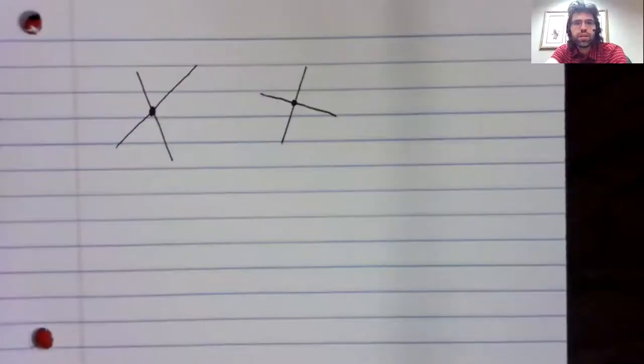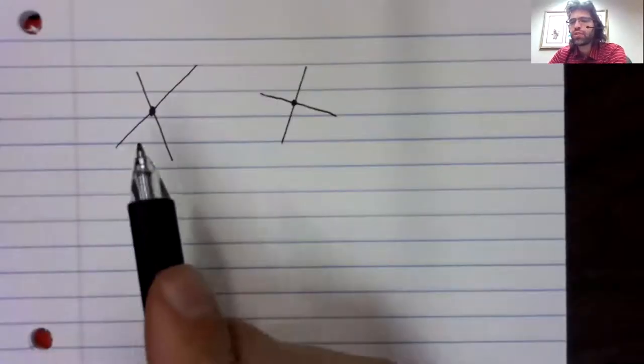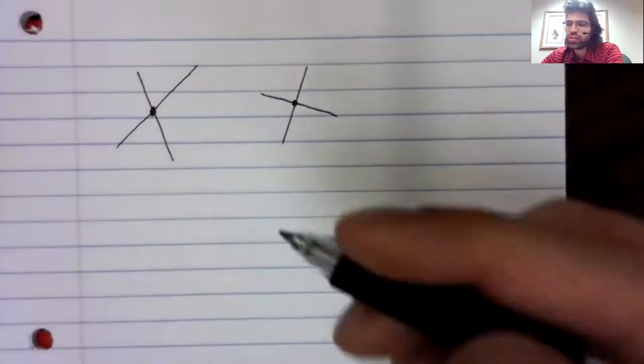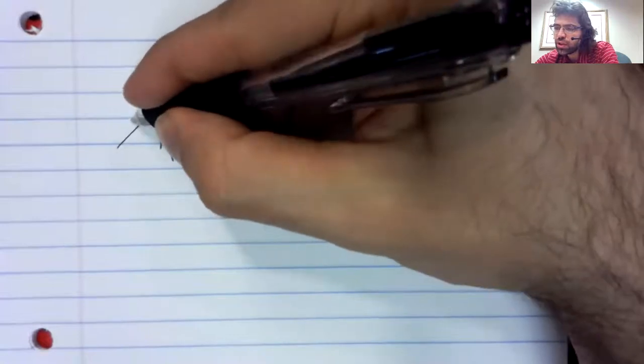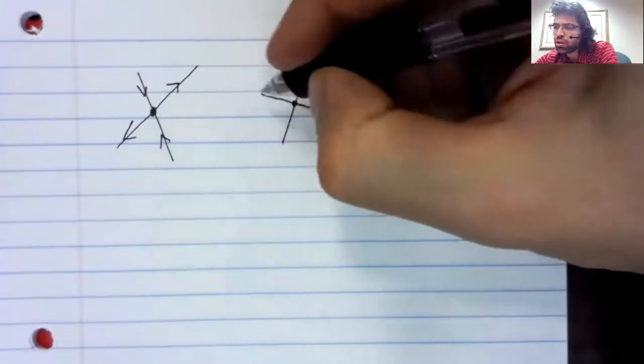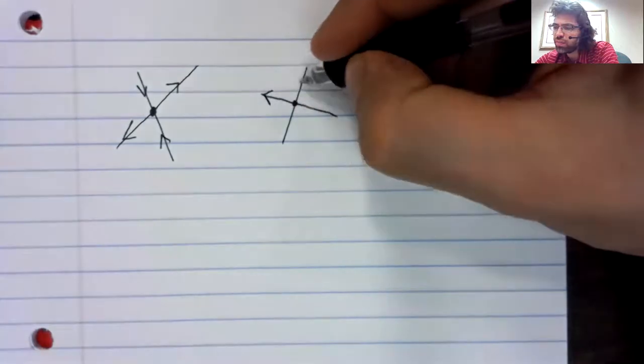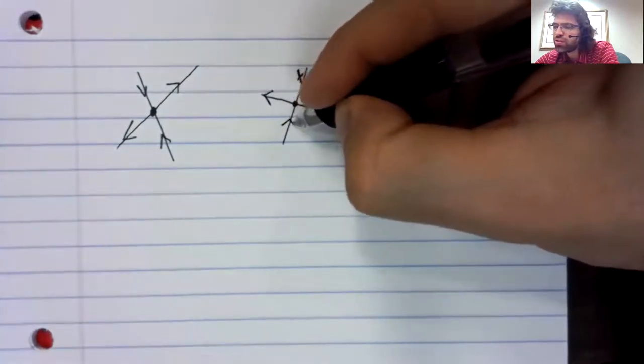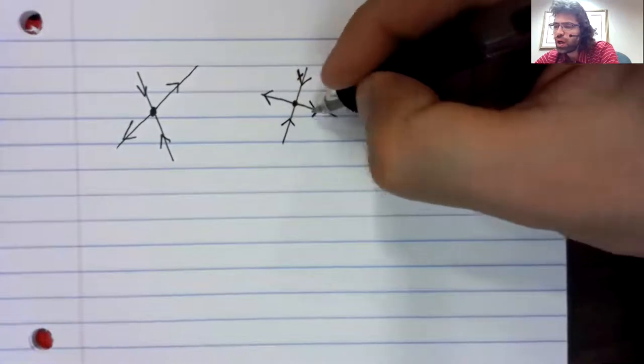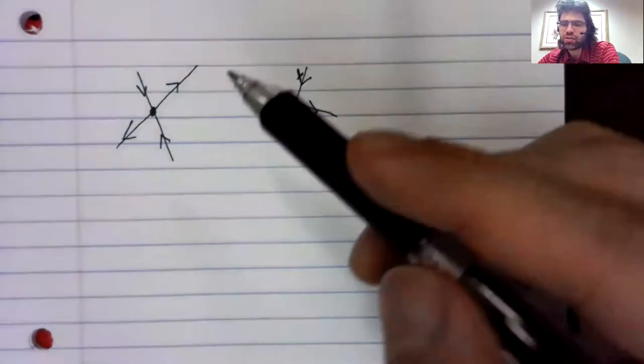Let's define heteroclinic orbits. Say that we have two different fixed points, and both of these fixed points are saddle fixed points.